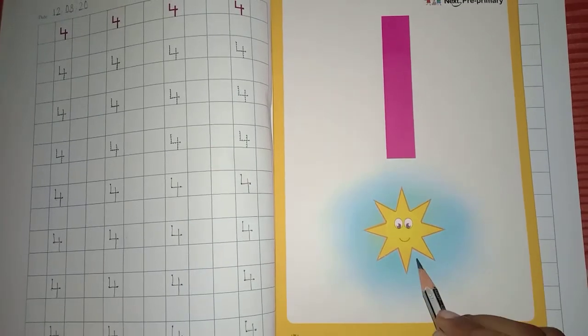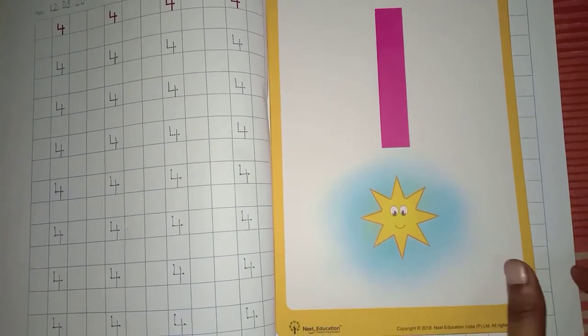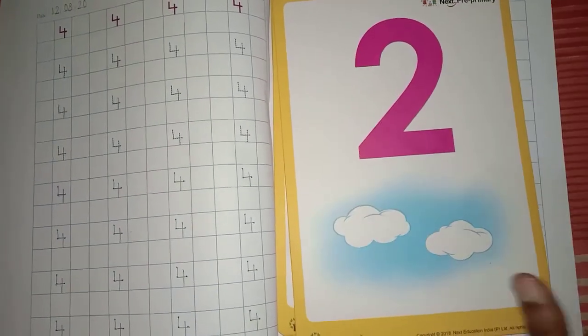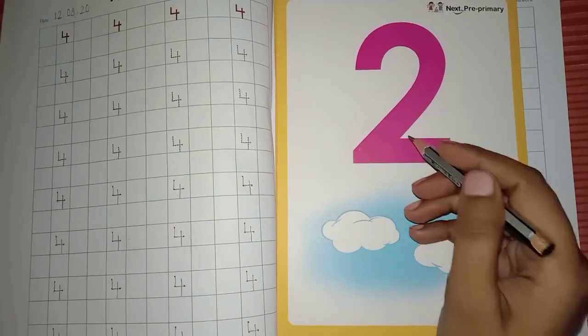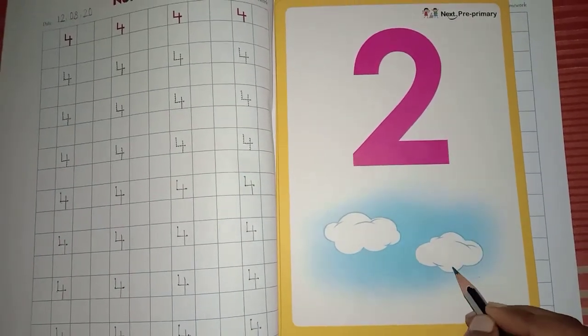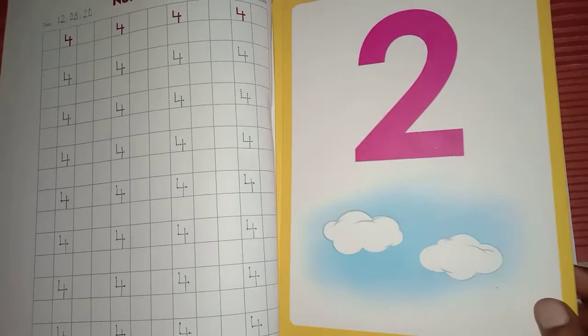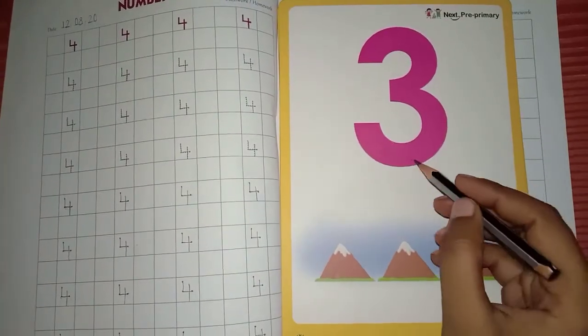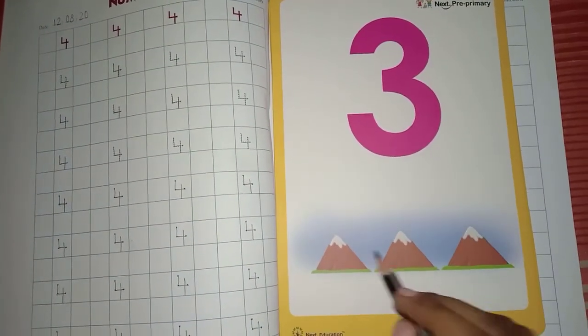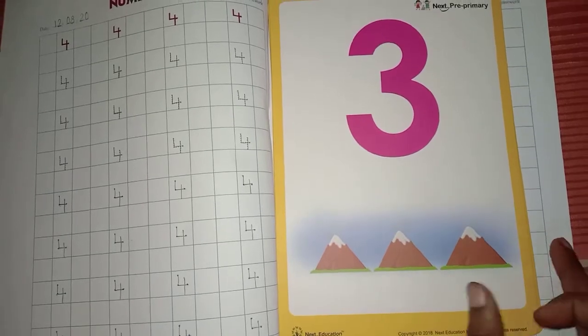1, 1 sun. 2, 1, 2, 2 clouds. 3, 1, 2, 3, 3 mountains.